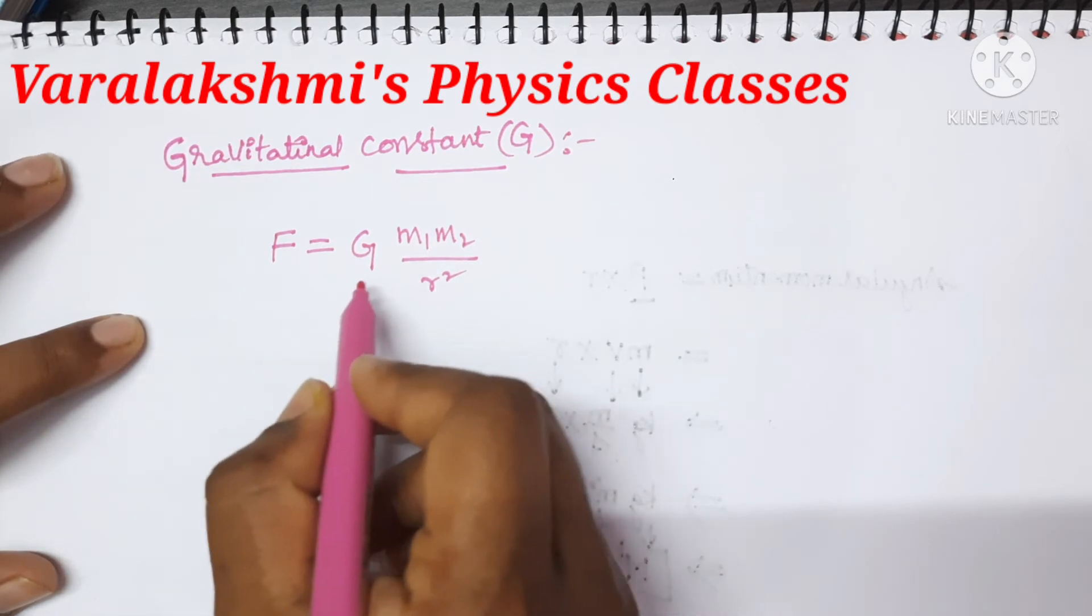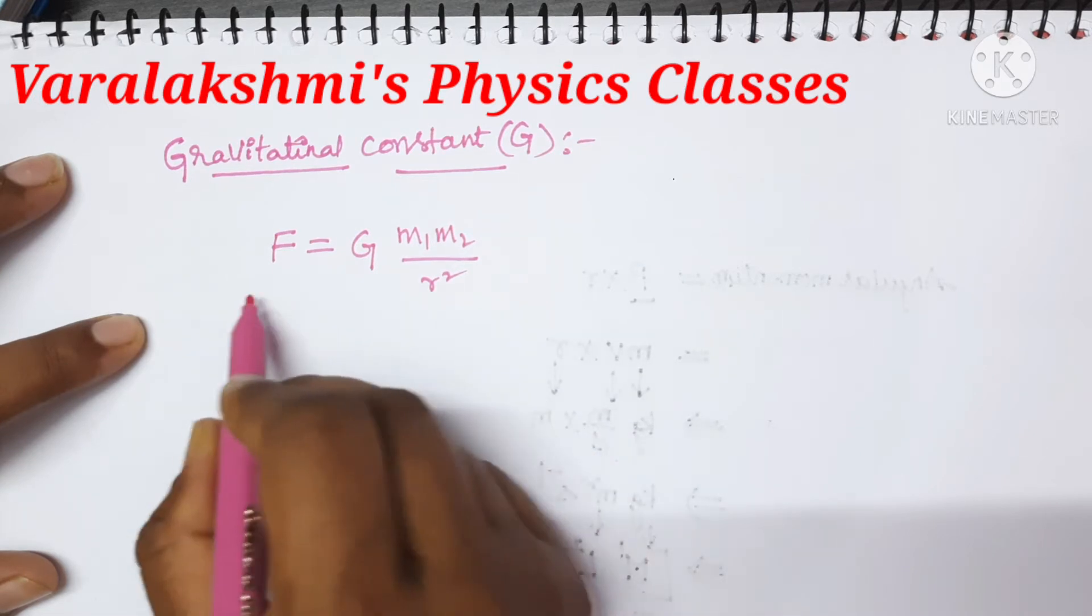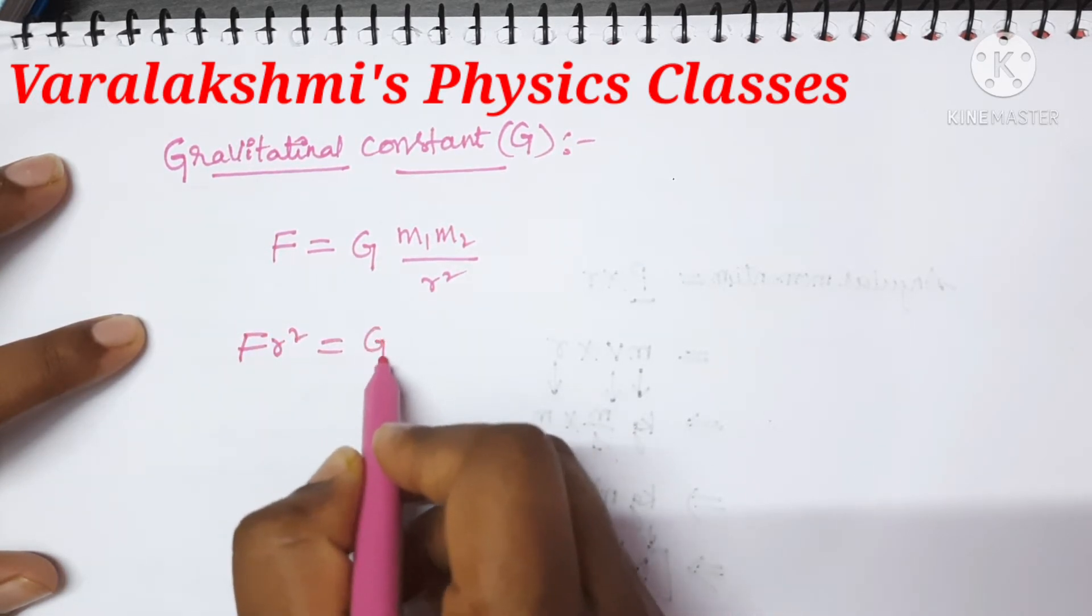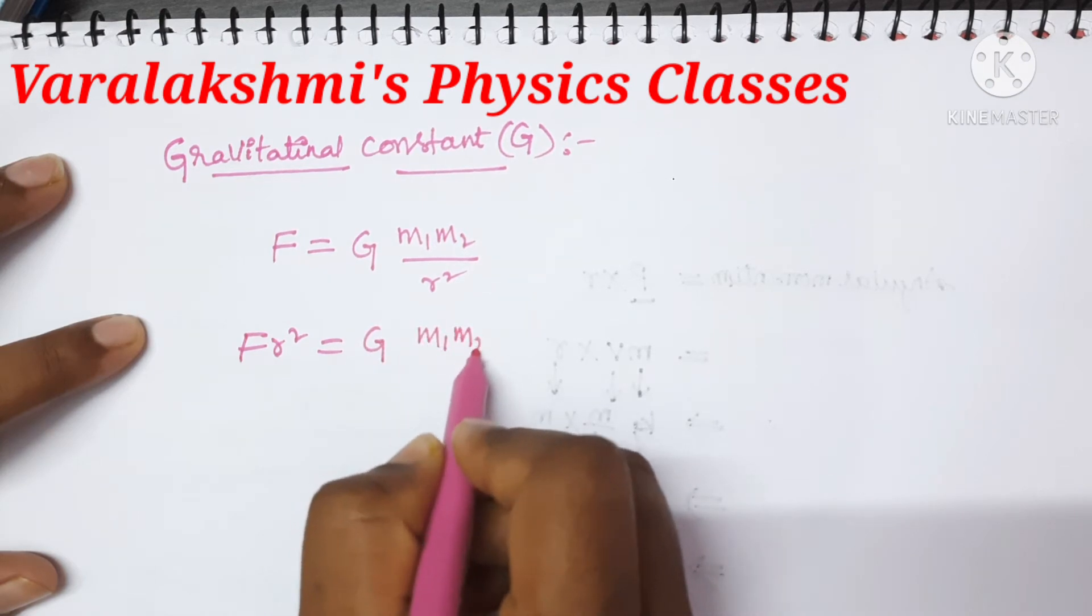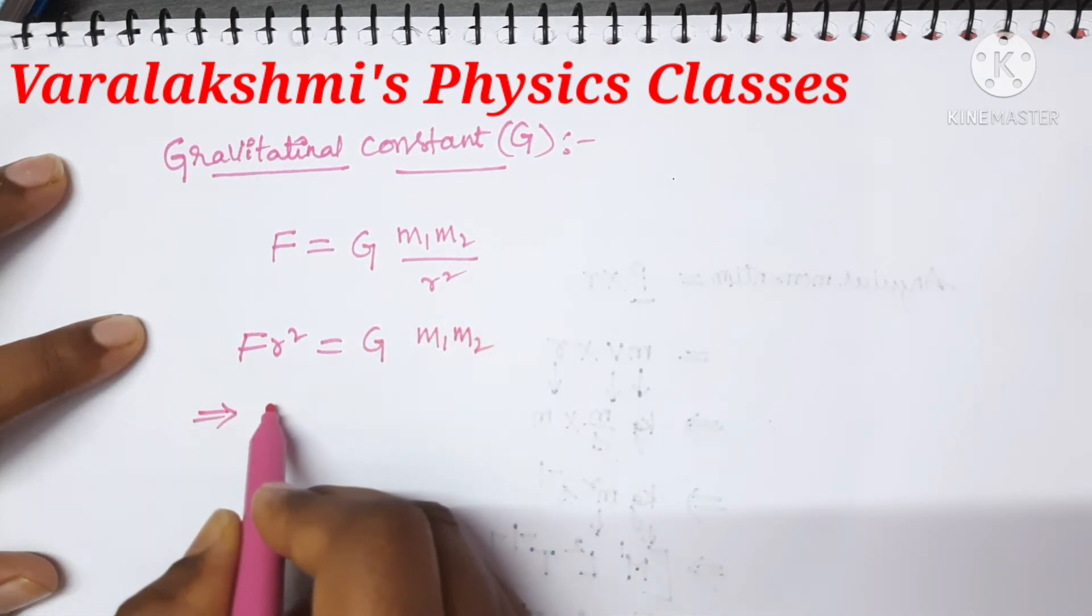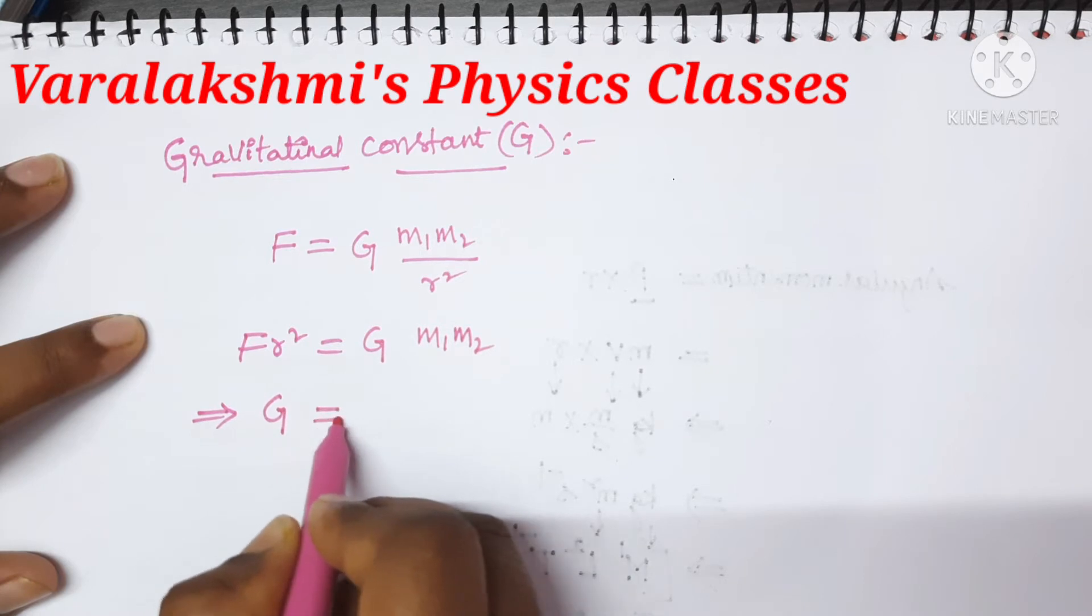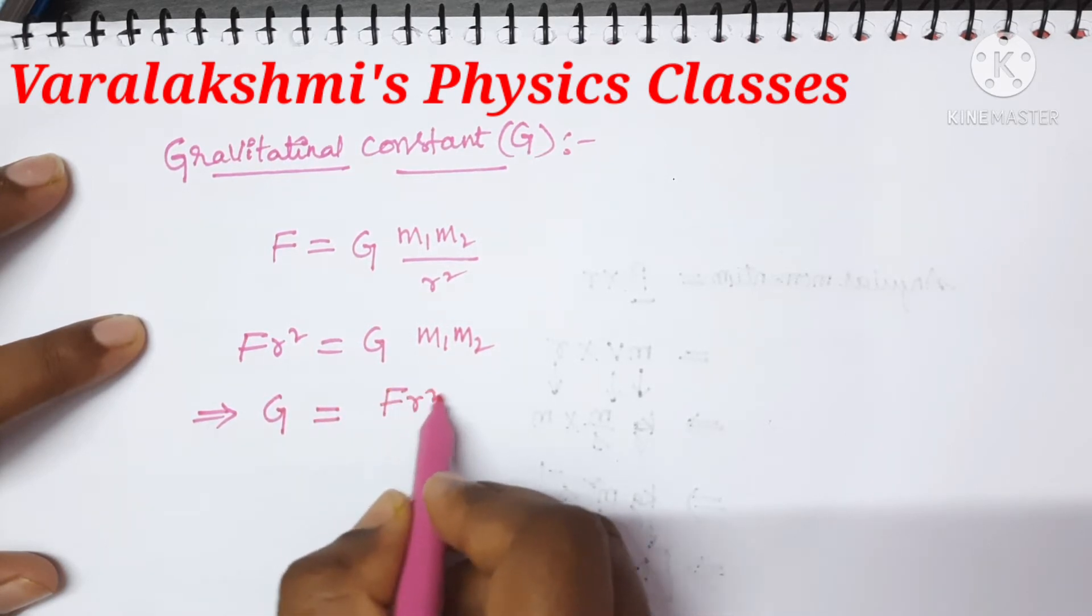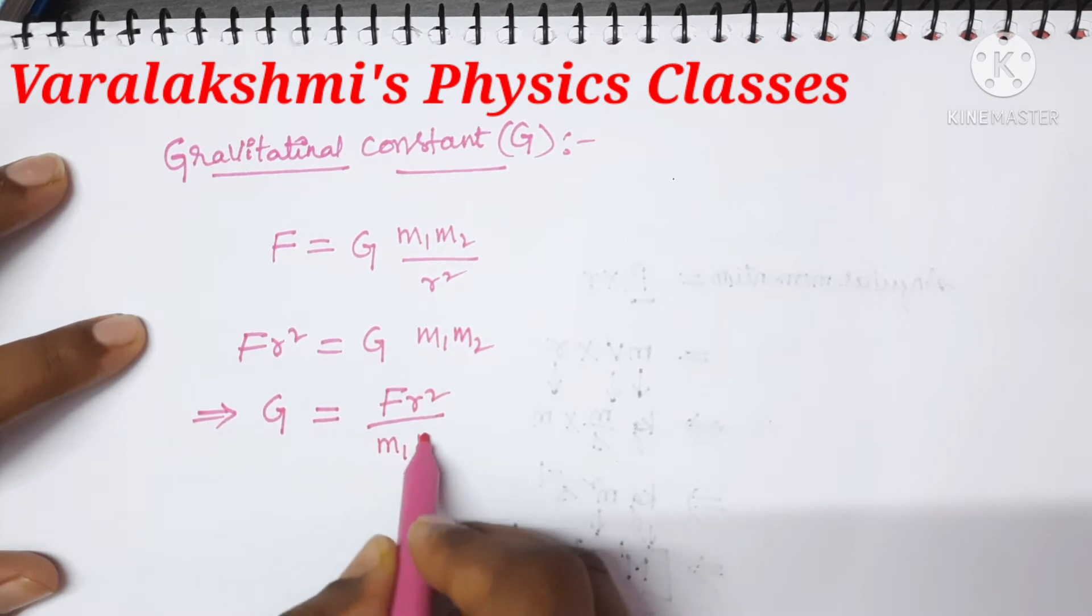Now we are going to write the dimensions for the gravitational constant. Take R to the other side, so F R square equals G times M1 M2. Now further simplify this. G equals F R square divided by M1 M2.